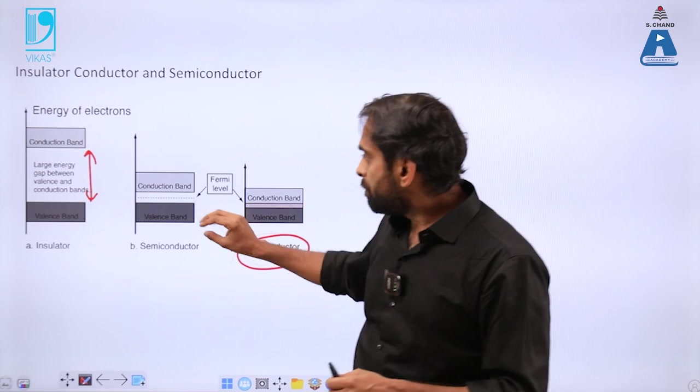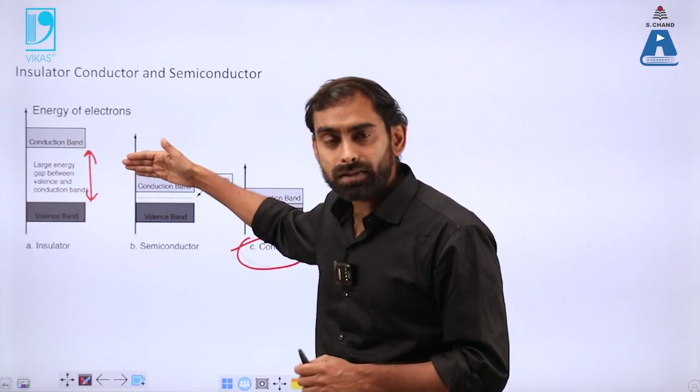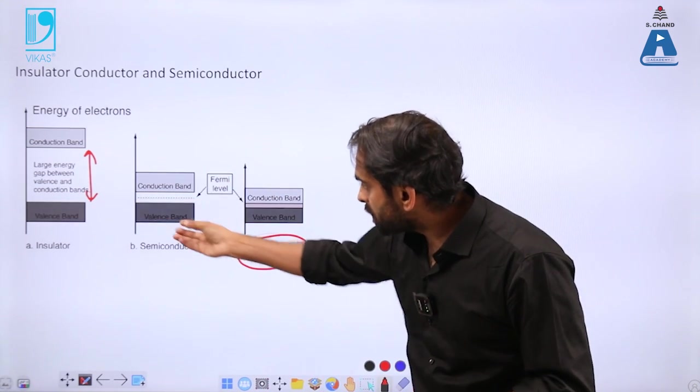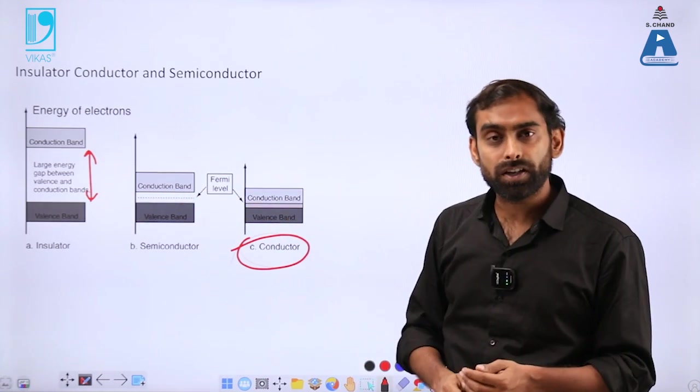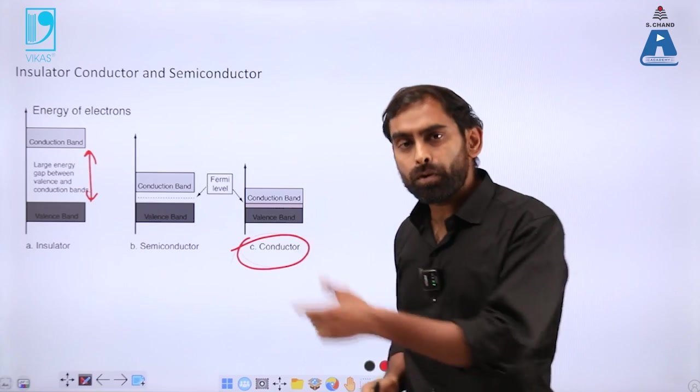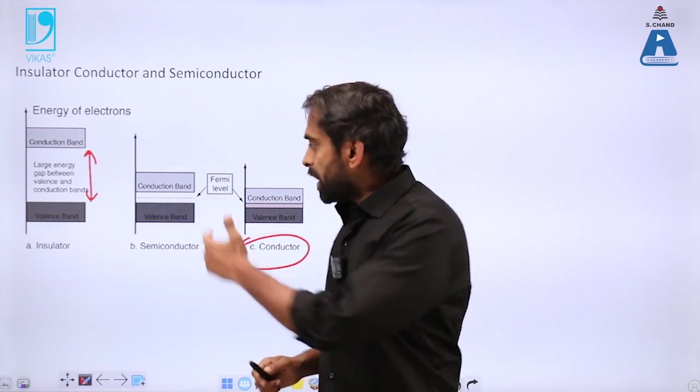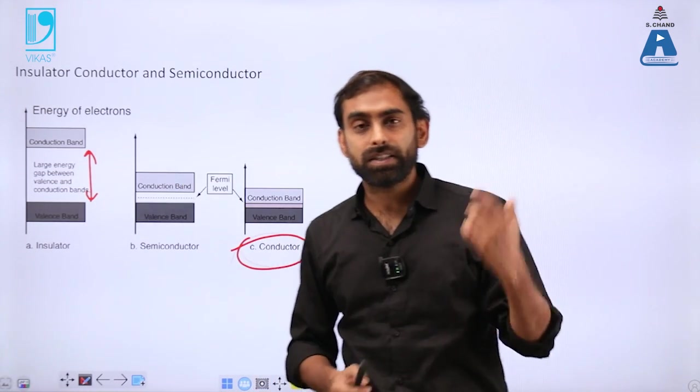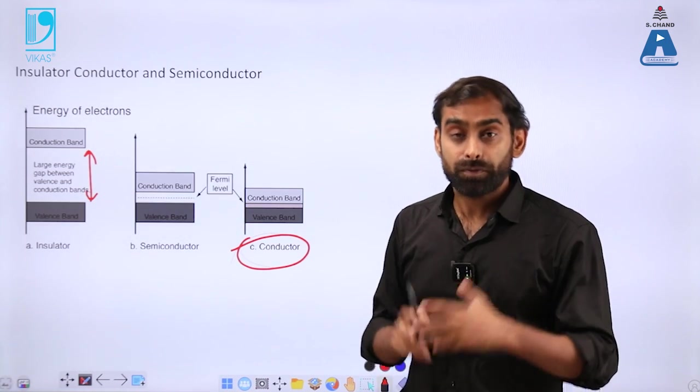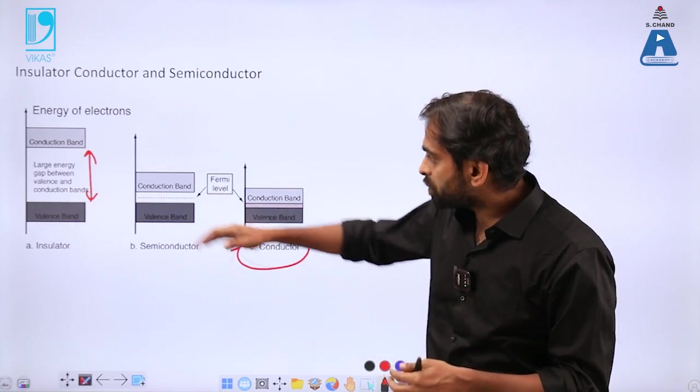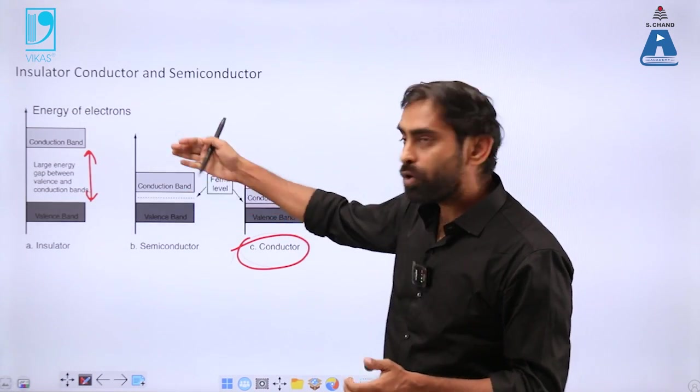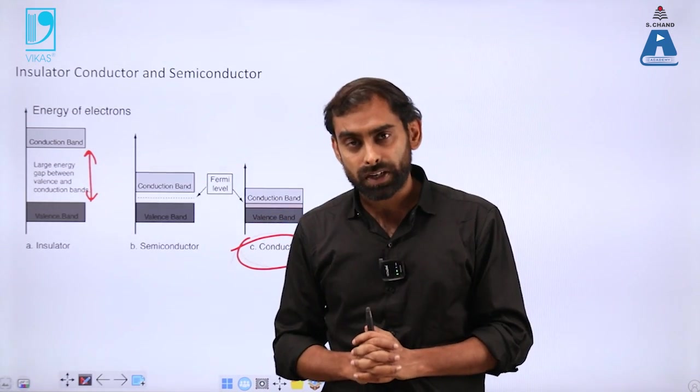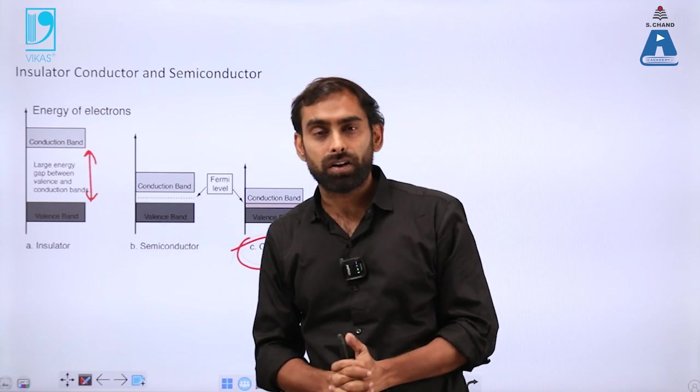But there are certain means by which you can overcome this energy. You can supply some energy to these materials, and electrons can start moving into the conduction band. If you provide that energy, electrons can become free and start becoming conductive. If you keep increasing that energy, their conductivity is influenced, and they can become more conductive.